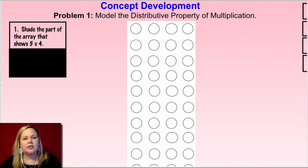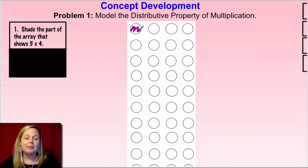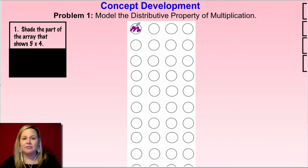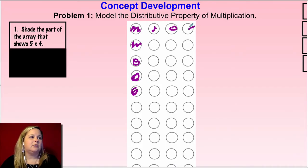What you're going to do first is shade the part of the array that shows five times four. Grab your marker and shade in five times four. Remember, the first factor is the number of rows, so we have five rows with four in each row. I'm going to shade five rows and fill in all the rest. It doesn't have to be perfect when you're shading — do not waste time coloring them in perfect, just so they stand out.